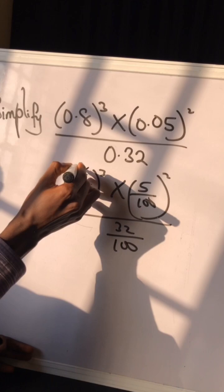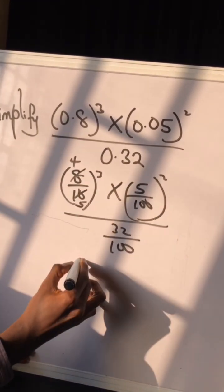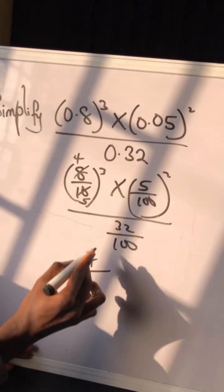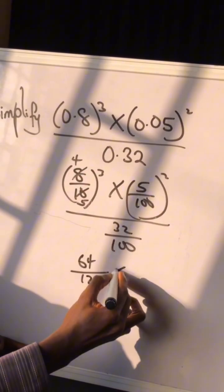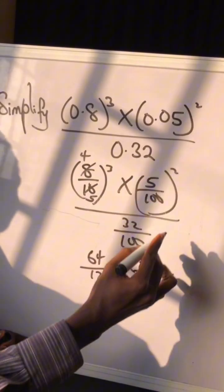Now simplify: 2 into this is 4, 2 into this is 5, so I got 4³ which is 64, over 5³ which is 125, times 5² which is 25, over 100² which is 10,000, divided by 32 over 100.